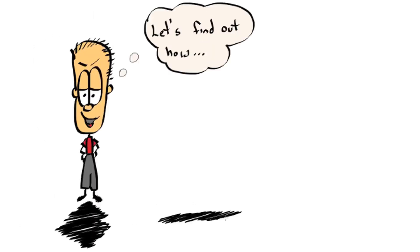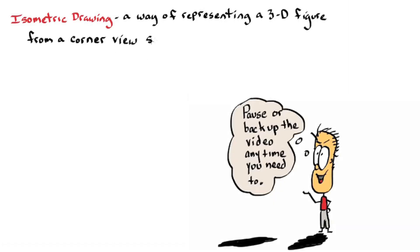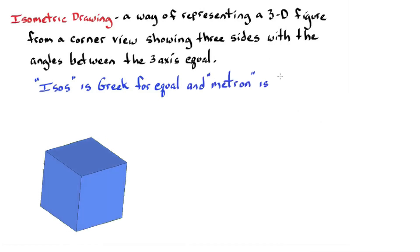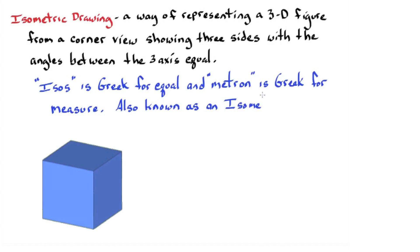Let's take a look at some vocabulary. Isometric Drawing: A way of representing a three-dimensional figure from a corner view, showing three sides with the angles between the three axes equal. Isos is Greek for equal, and Metron is Greek for measure. Also known as an isometric projection.